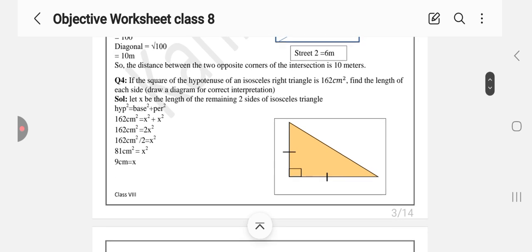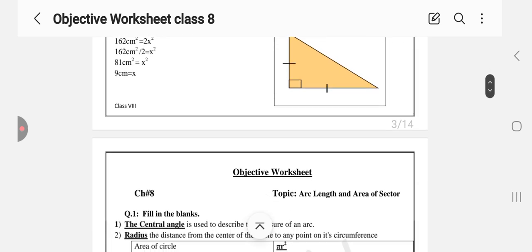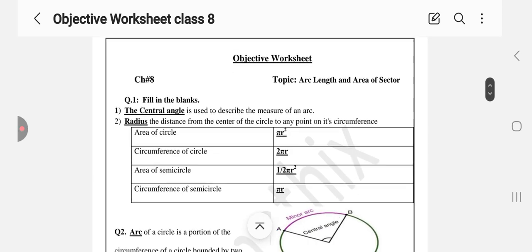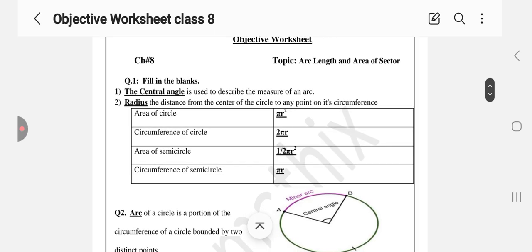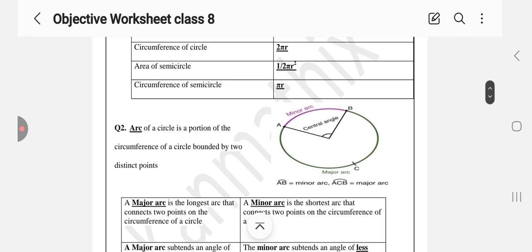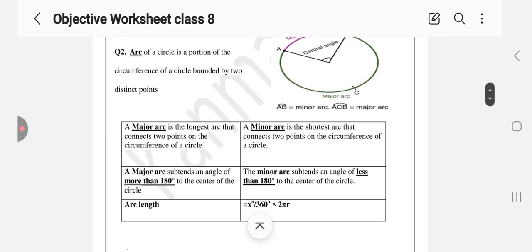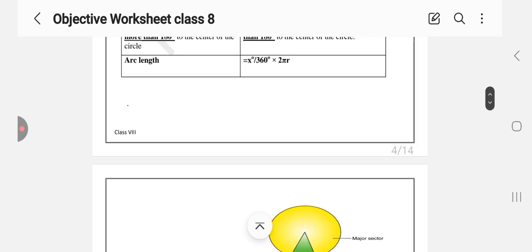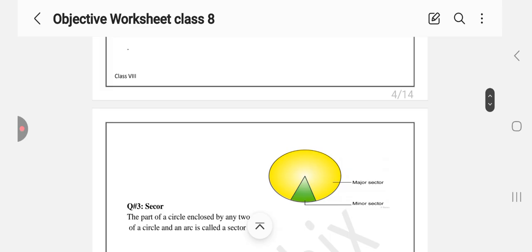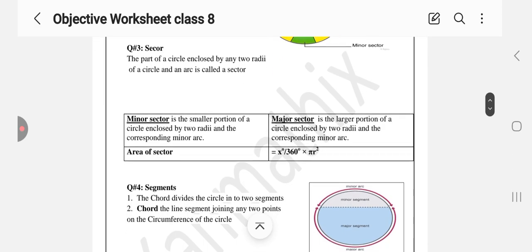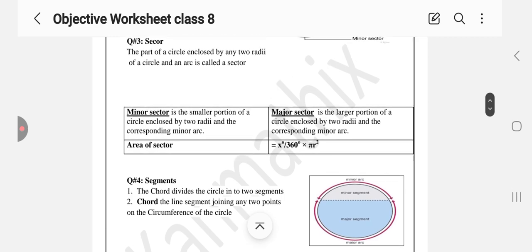You can take a screenshot. Then you have the objective worksheet for chapter number 11 which will cover the entire chapter on arc length and area of the sector. To revise your concepts, you have to attempt these worksheets. Question number 3 is based on the sector.